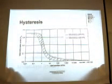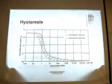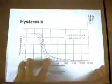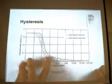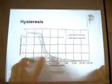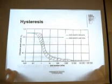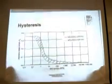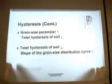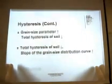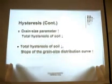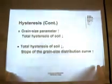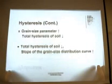Hysteresis. In this paper, they use a new concept of total hysteresis to describe the difference between the drying and wetting SWCC curves, using the area between the drying and wetting SWCC to quantify the total hysteresis. That means the larger the area, the greater the total hysteresis. From the total hysteresis quantification, they found that the larger the grain-size parameter, the smaller the total hysteresis. And with the slope of grain-size distribution curve increasing, the total hysteresis decreases.